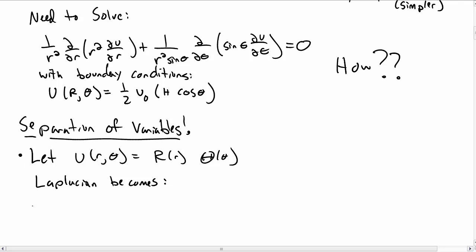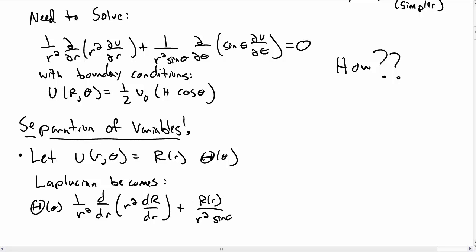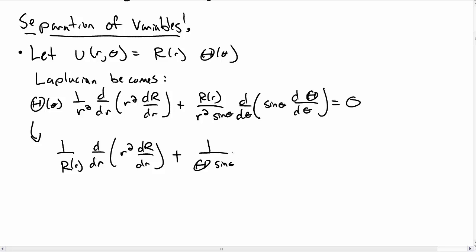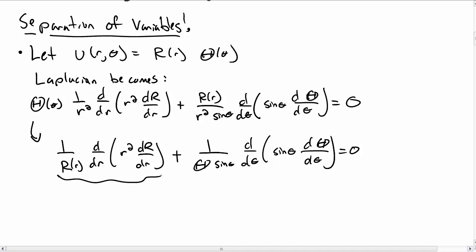The sum of these two terms must equal zero. Dividing the whole equation by R·Θ, we get for the first term (1/R) times the r-derivatives, plus (1/(Θ sinθ)) times the θ-derivatives of Θ, all equal to zero. As usual in separation of variables, we have one function of r and one function of θ, which when added must be zero, so they must each be constants.